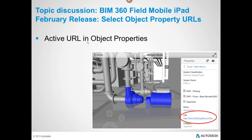The first thing is now inside of the properties, you can add an active URL. So if you've got a pump, you can go in and just link it right to that manufacturer's pump page or any other object that you have. End users can come, click that URL, and that's going to take you right out to the website or document that you wanted to go to.